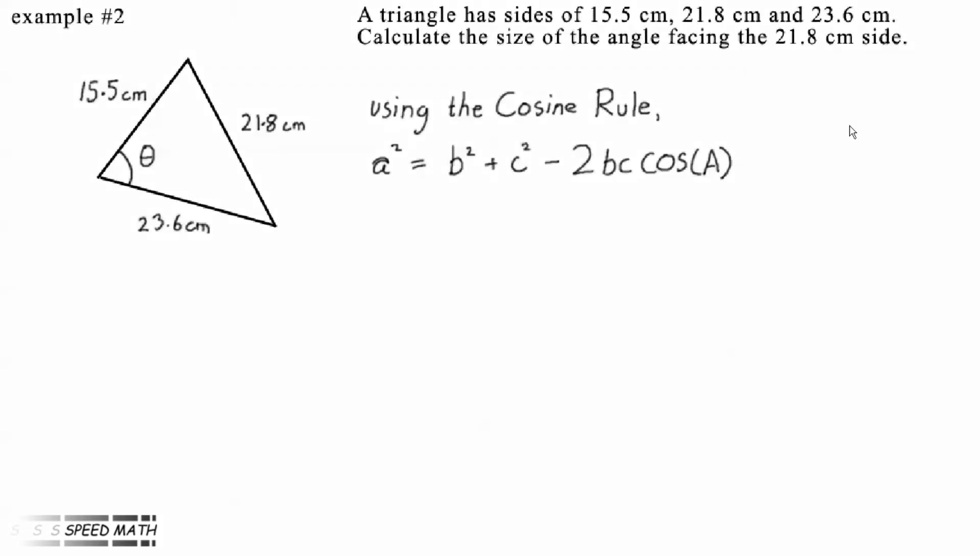In this problem, it's not a straightforward substitution. We have to change the equation around and make the angle the subject of the equation. We don't have the angle, we have the cosine of the angle, so we have to make the cosine of the angle the subject of the equation.